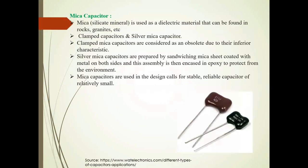Now, mica capacitor. In this mica capacitor, silicate mineral mica is used as the dielectric material and it can be found in rocks and granites. Types of this mica capacitor are clamped capacitors and silver mica capacitors. Clamped mica capacitors are considered obsolete due to their inferior characteristics. Silver mica capacitors are prepared by sandwiching a mica sheet coated with metal on both sides, and this assembly is then encased in epoxy to protect from the environment. Mica capacitors are used in designs that call for stable, reliable capacitors that are operatively small.